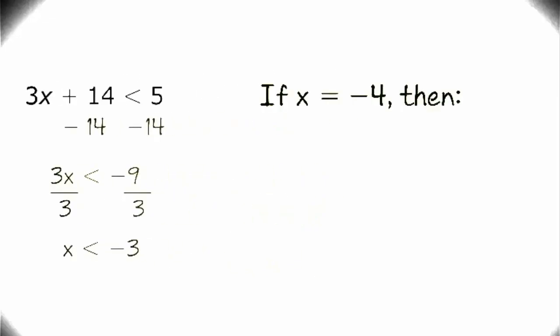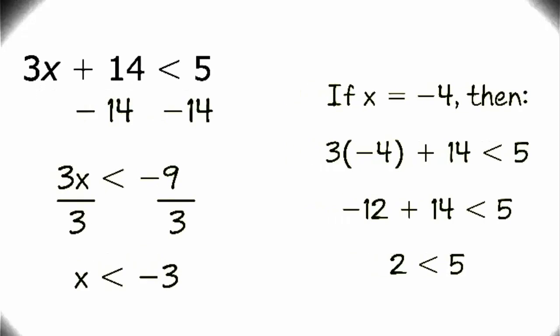For example, if x is equal to negative 4, we can substitute that into our equation. 3 times negative 4 is negative 12, plus 14 is less than 5. And negative 12 plus 14 is 2, and 2 is definitely less than 5, so that number would work.